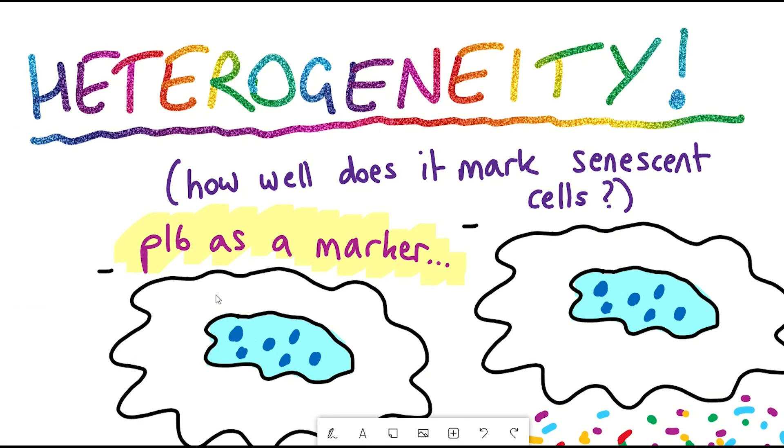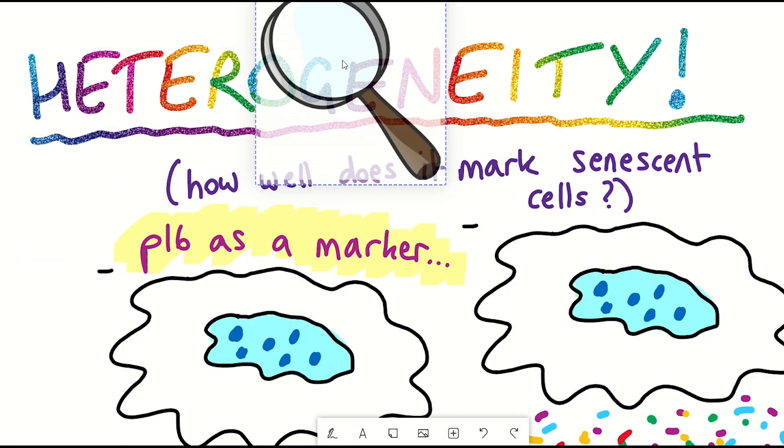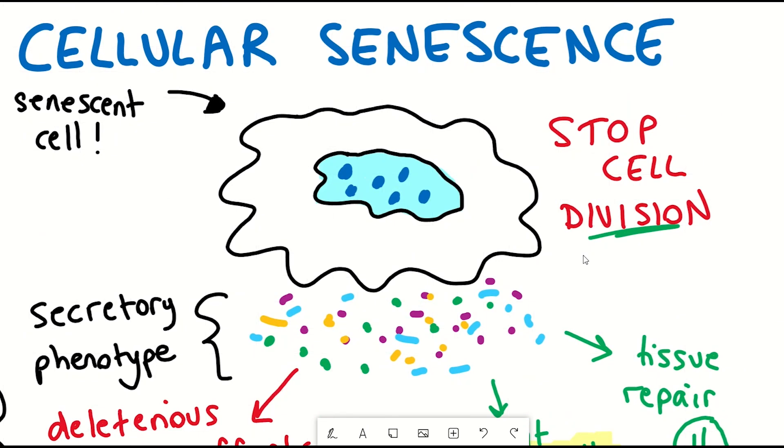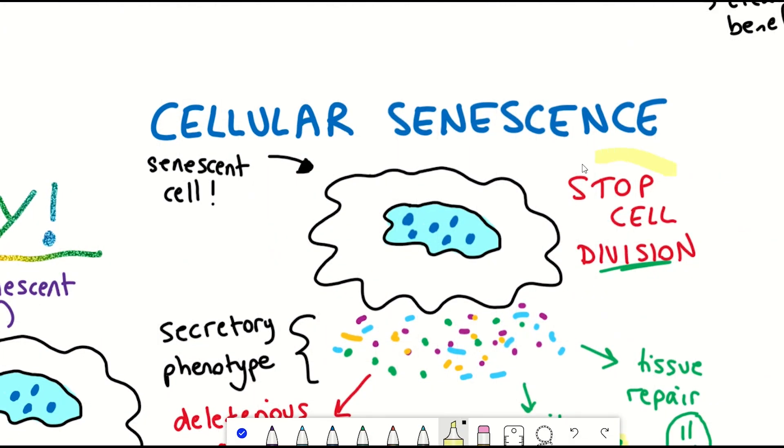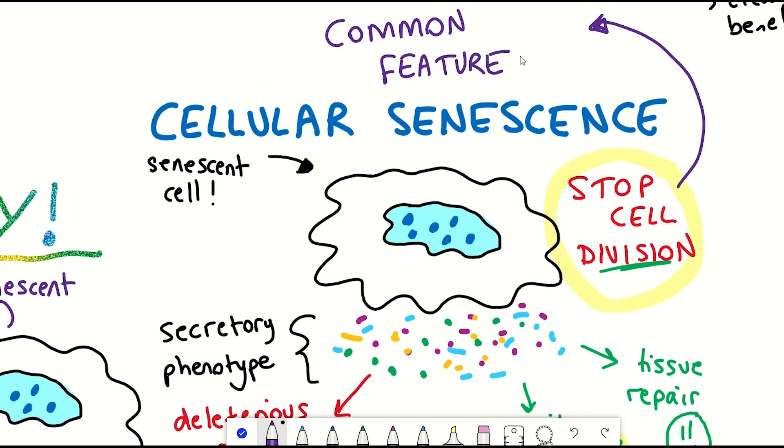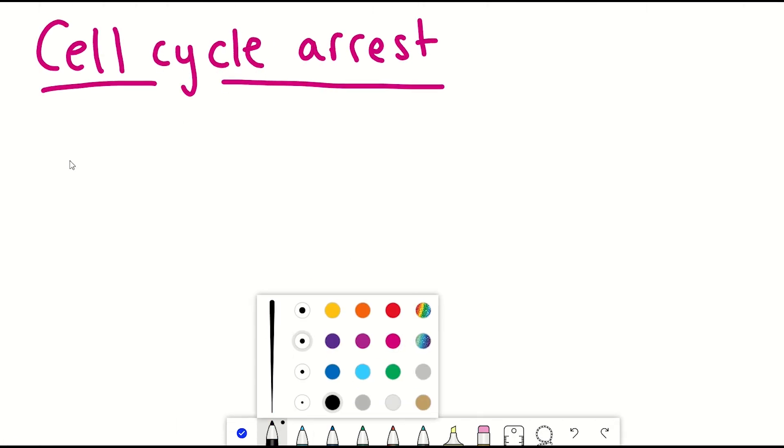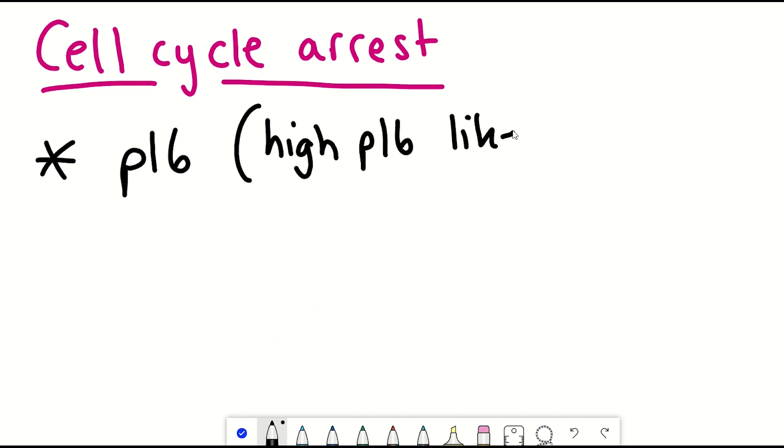But this raises an interesting question, and an important question in the field, which is, well, how do we actually identify senescent cells? Well, despite their diversity, a key shared feature across senescent cells is that they have stopped dividing, so-called cell cycle arrest. One protein involved in this cell cycle arrest is P16. So the rationale with the previous work was that cells with high expression of P16 are likely to be arrested, and therefore also likely to be senescent.